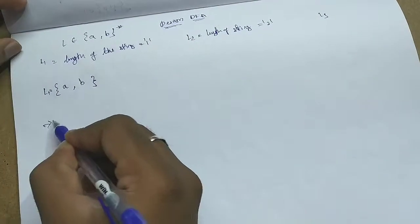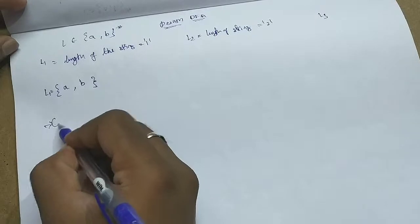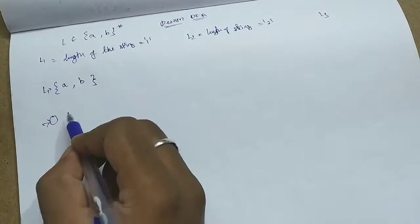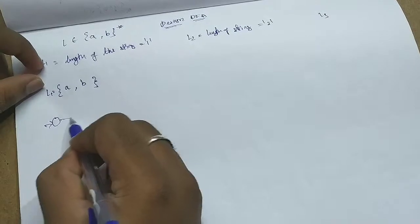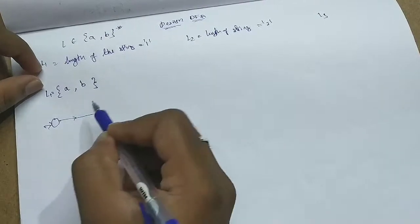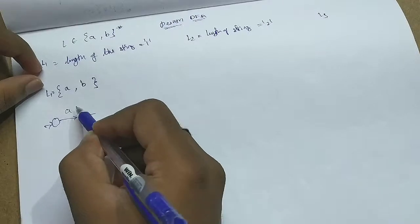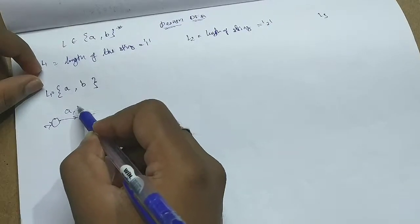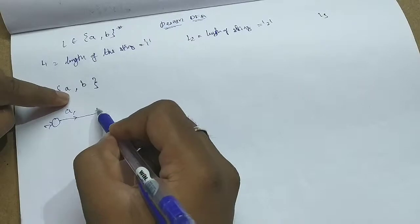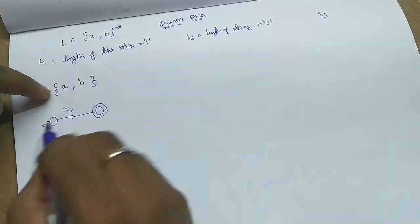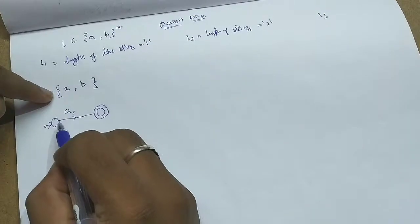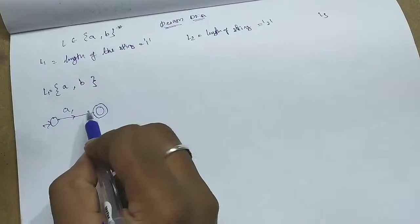Whenever I am starting to design a DFA, I will start with the initial state. You all know you have to start with the initial state. I have to accept either 'a' or 'b'. If I want to accept, I have to go to the final state on seeing 'a'. On 'a', I have to go to the final state. I am going there.